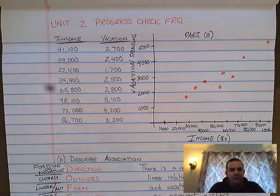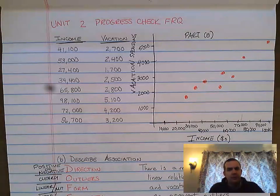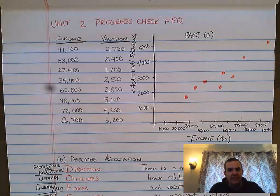Welcome back, everyone. I've moved on to Unit 2 progress checks, free response questions. We're going to start with the first one that asks you to make a scatter plot from a given set of data.